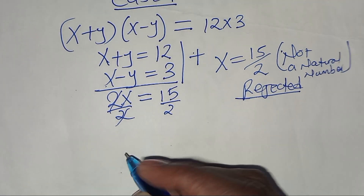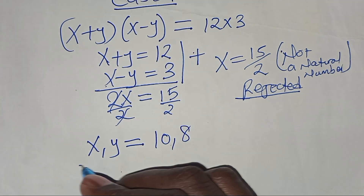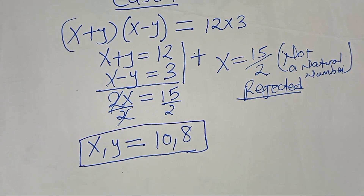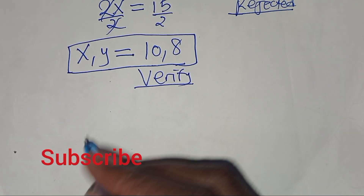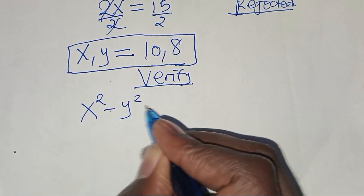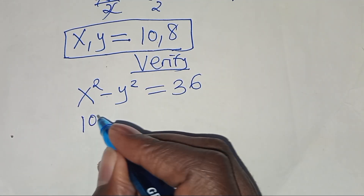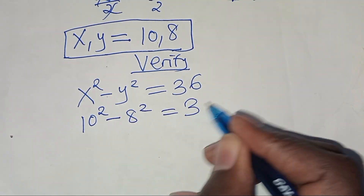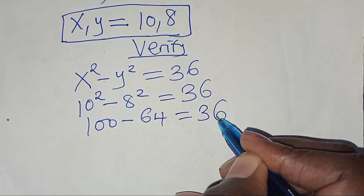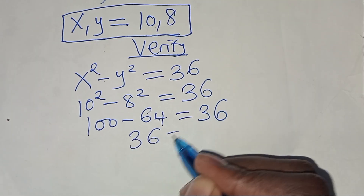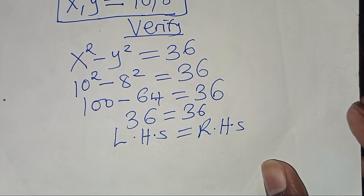We only have one solution: (x, y) = (10, 8). Let's verify: x squared minus y squared = 10 squared minus 8 squared = 100 minus 64 = 36. The left-hand side equals the right-hand side, confirming this is the correct solution.